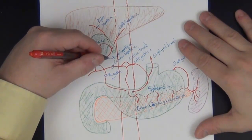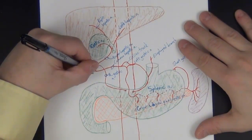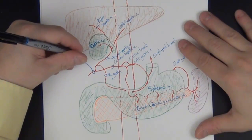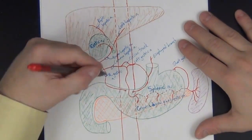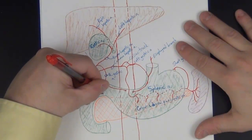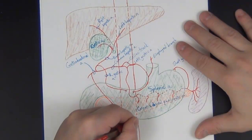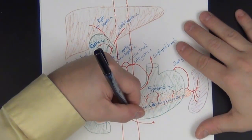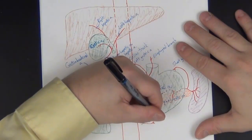Now we've covered the common hepatic branching into the proper hepatic and its sub-branches. The inferior branch of the common hepatic is the gastroduodenal artery, which goes to the stomach and duodenum. One of its branches goes to the greater curvature of the stomach — the large ballooned-out area on the inferior surface — and this is called the right gastro-omental artery.